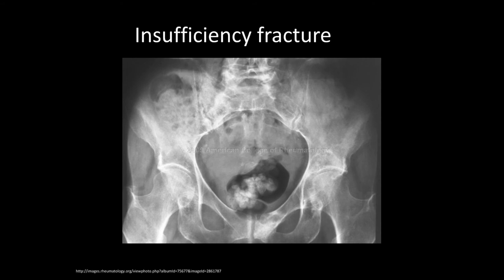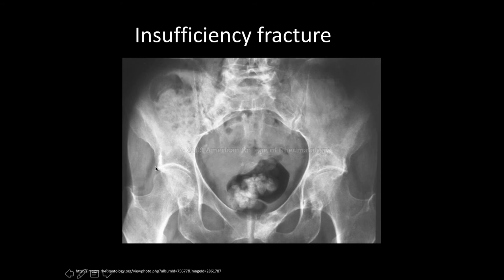Insufficiency fractures — here there's a fracture of the left pubic body, causing increased density. Oftentimes where there's one fracture, there's another, and insufficiency fractures can happen all around the pelvis. When you see pathology, you always have to look for the next one. There might be something happening in the right sacroiliac region — I'm not sure. Here you can see why it can be really difficult because fecal shadows can obscure things. But this is a good example of insufficiency fracture, and also a good example of the different densities — the lucent gas in the rectum, muscle shadows, and fat planes separating muscle groups.